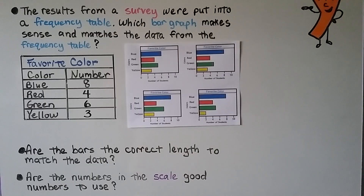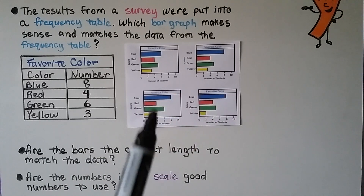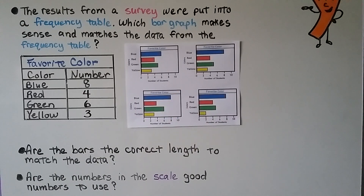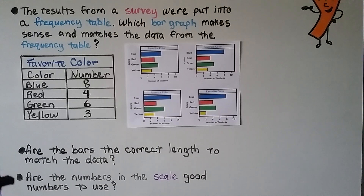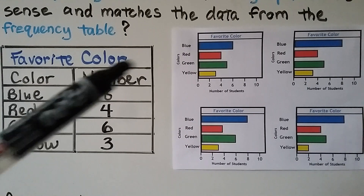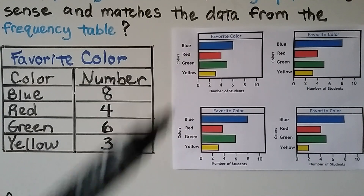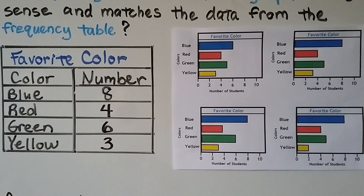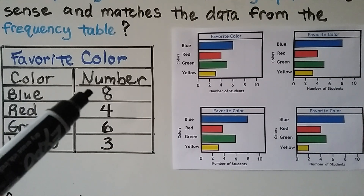The results from a survey were put into a frequency table — remember, frequency tables use numbers. Which one of these bar graphs makes sense and matches the data from the frequency table? We need to check whether the bars are the correct length and whether the scale numbers are good to use. They all show favorite colors and all have the same answers: blue, red, green, or yellow. But it needs to match the frequency table.